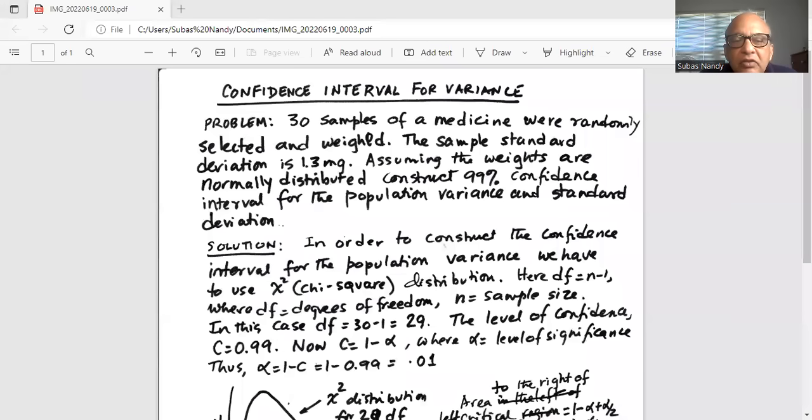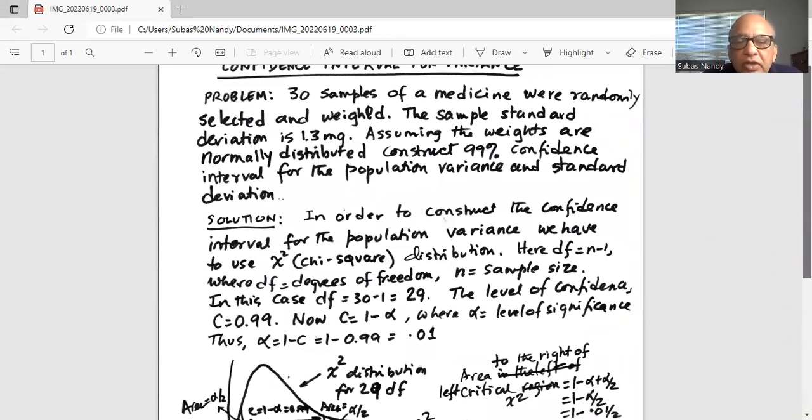30 samples of a medicine were randomly selected and weighed. The sample standard deviation is 1.3 milligrams. Assuming the weights are normally distributed, construct 99% confidence interval for the population variance and standard deviation.